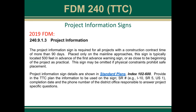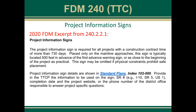Project information signs: the 2019 FDM had the old 90-day requirement. That is being updated to a much lengthier period. From the 2020 FDM excerpt from 240.2.2.2.1, the project information sign will now only be required for projects with a construction contract time of more than 730 days. This should eliminate the use of project information signs on a considerable number of projects. The other requirements are still the same at this time.